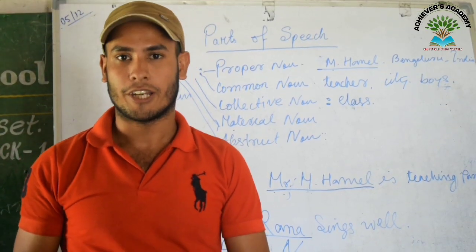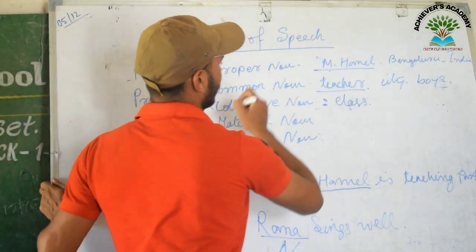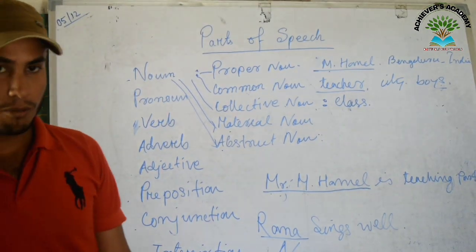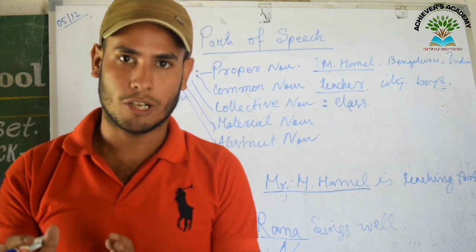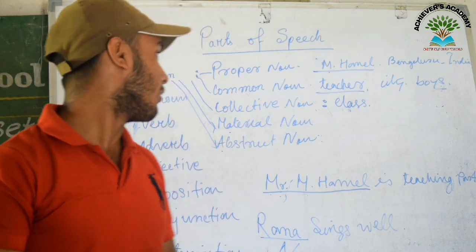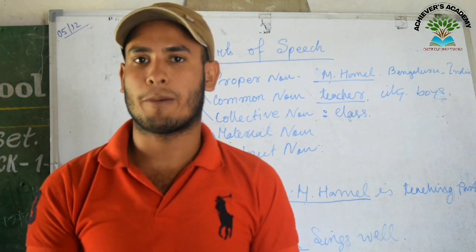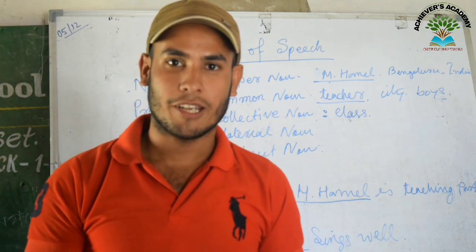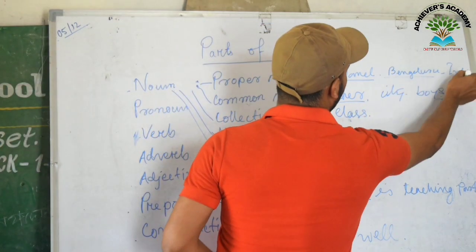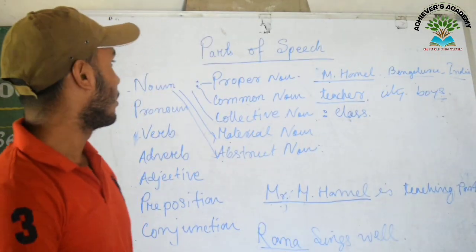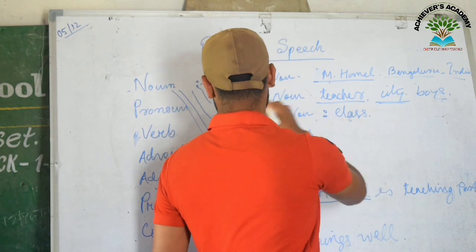When I say 'teacher,' it is common, so it is a common noun — because anyone can be a teacher. But when I say a particular teacher, then it will be a proper noun. For example, 'Bangalore is a beautiful city in India.' Here Bangalore and India are proper nouns, and city becomes a common noun.